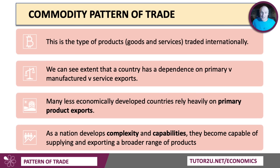The commodity pattern of trade refers to the types of products — the mix of goods and services that are traded internationally — and we look at the extent to which countries are dependent on one or more sectors: farming, manufacturing, services. Many countries at an earlier stage of economic development typically rely heavily on primary products such as oil, copper, gas, farm products like tea and coffee. Whereas as a nation develops, we often see the complexity and capability of its trade increase, meaning it can supply a much wider range of products.